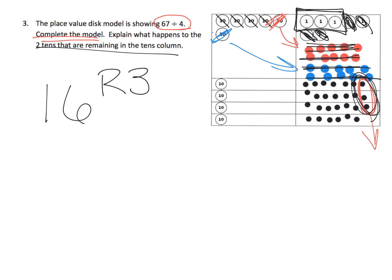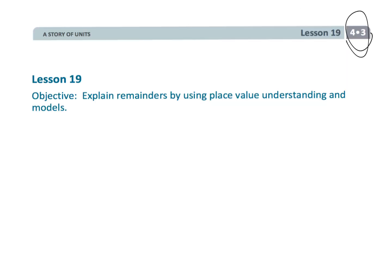The big deal with this question is, they're asking, well, what happens to these two tens in the tens column? They get cashed in for ones. And that wraps up 4th grade, module 3, lesson 19, where we are kind of taking a little bit of a step back, using models again, just to make sure we understand each step of the standard algorithm.